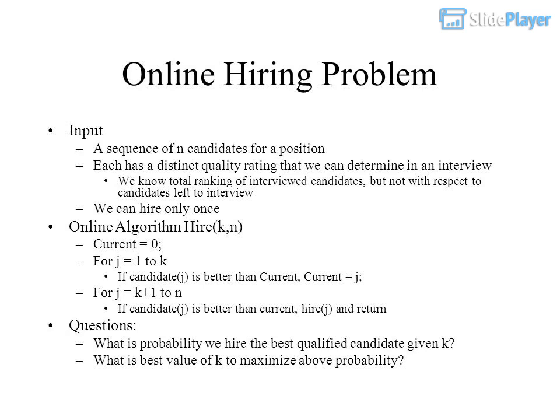Online Hiring Problem: a sequence of N candidates for a position, each with a distinct quality rating determined in an interview. We know the total ranking of interviewed candidates, but not with respect to candidates left to interview, and we can hire only once. Algorithm hire(K, N): set current equals 0; for J equals 1 to K, if candidate J is better than current, set current equals J; for J equals K+1 to N, if candidate J is better than current, hire J and return.